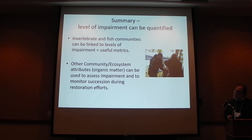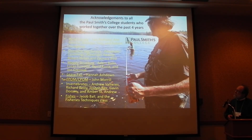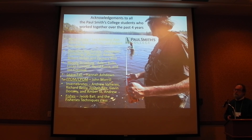In summary, the level of impairment can be quantified, invertebrate and fish communities can be linked to levels of impairment, and there are other community and ecosystem attributes that can be used to assess impairment and monitor succession during restoration efforts. It's not just fish — it's an entire ecosystem or aquatic-terrestrial transition. Finally, I want to acknowledge all the students — a much longer list than shown — who have contributed to the accumulation of reliable knowledge over time.